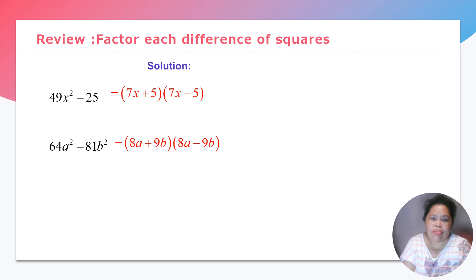Okay, let us review, factor each difference of squares. So we have here 49x squared minus 25. Of course, this is a perfect square. So that means 49, this square is 7x. So this is our answer that is correct. The factors are 7x plus 5 and 7x minus 5. For 64a squared minus 81b squared, we have 8a plus 9b times 8a minus 9b. So the factors of 64 is 8 and for the 81, we have 9, negative and positive 9. So this is correct.